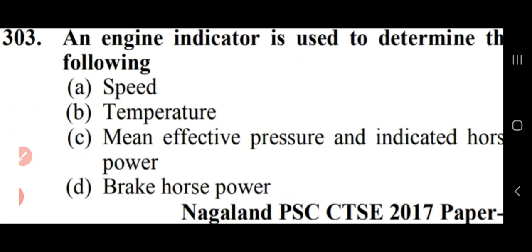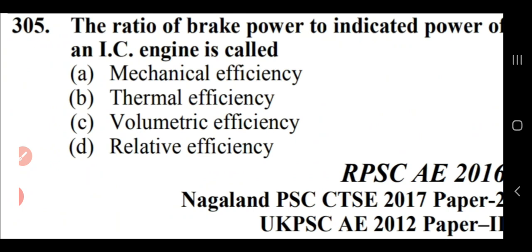An engine indicator is used to determine mean effective pressure and indicated horsepower — option C. The ratio of brake power to indicated power of an IC engine is called mechanical efficiency — option A. This question has been asked in RPSC (Rajasthan PSC), Nagaland PSC, and Uttarakhand PSC.